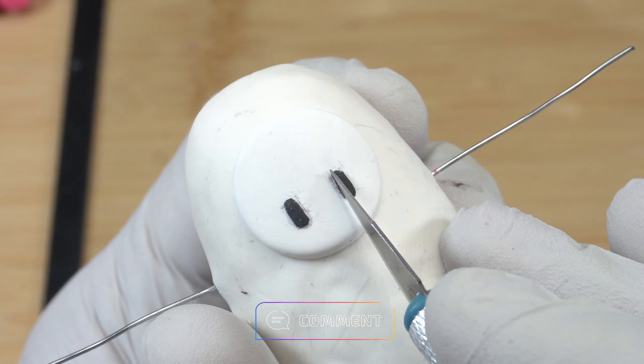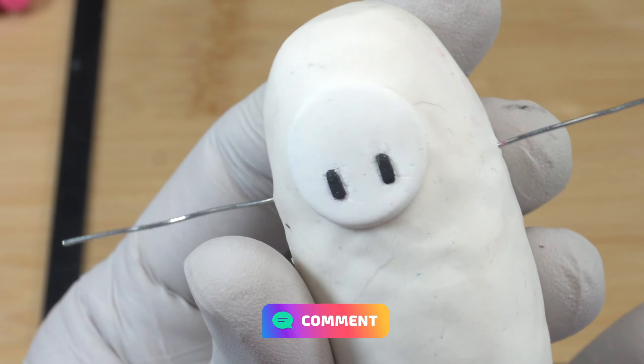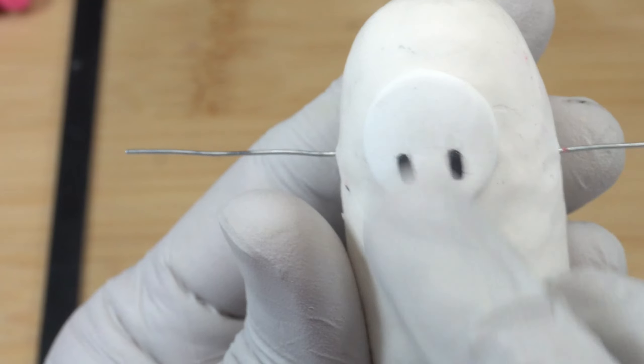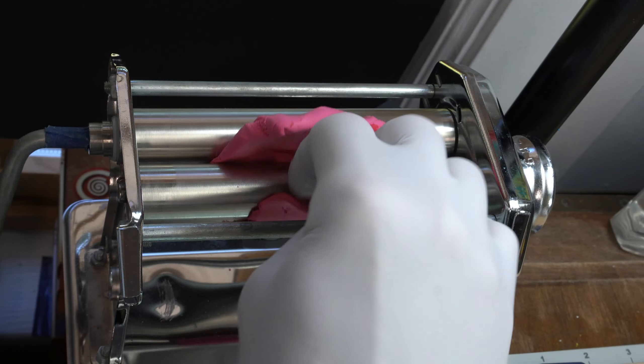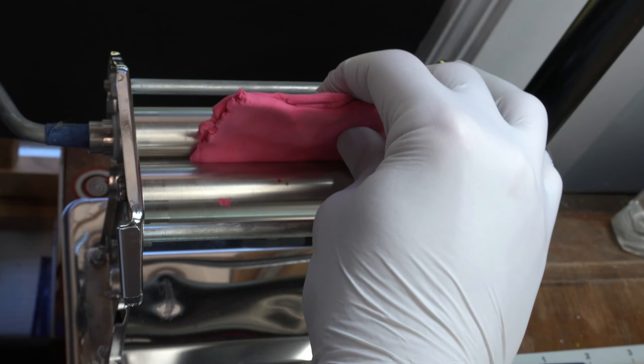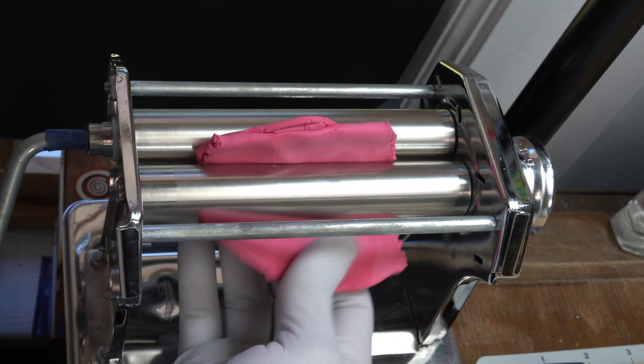Maybe I went too far. Let me know in the comments what you think. Now I'm preparing the clay for the pink skin. I'm using pink with red clay to create the Fall Guys pink color.